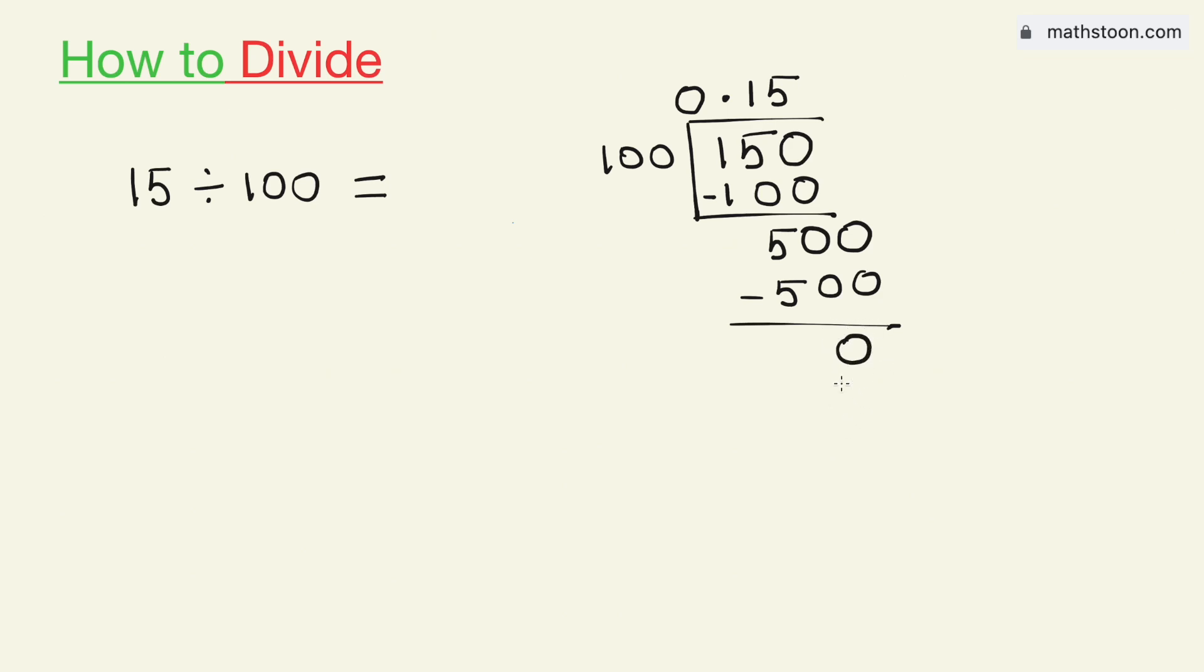As we have got the number zero, therefore we will stop. Therefore, the value of 15 divided by 100 is equal to 0.15. And this is our final answer.